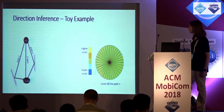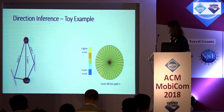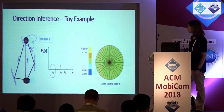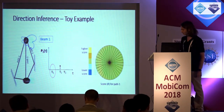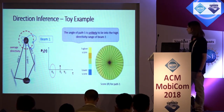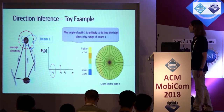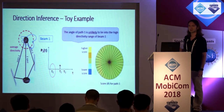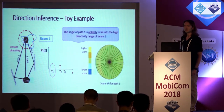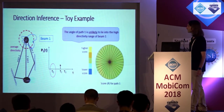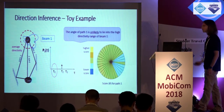Continuing with the same toy example, to infer the direction of path one, we use a scoring metric. We start with the assumption that any possible angle is equally possible. Here for simplicity I'm using a five-scale discrete metric; in the paper we have a continuous metric. We check the power delay profile of each beam one by one. Beam one does not capture path one, so the angle of path one is unlikely to lie in the high-directivity regions of that beam. I penalize those angles by lowering their score.